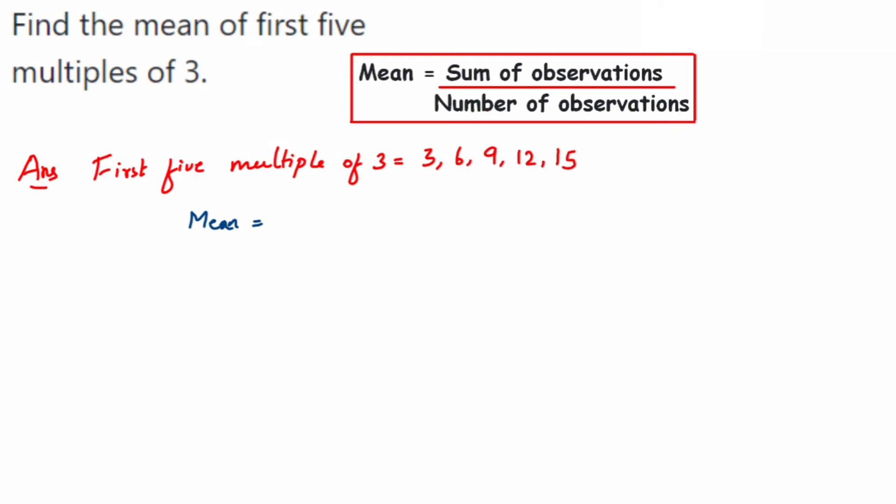We can write 3 plus 6 plus 9 plus 12 plus 15 divided by 5. When we add all the numbers in the numerator, we get 45, so 45 upon 5.